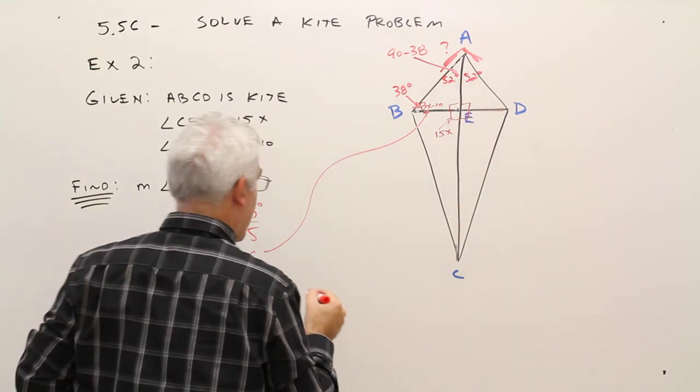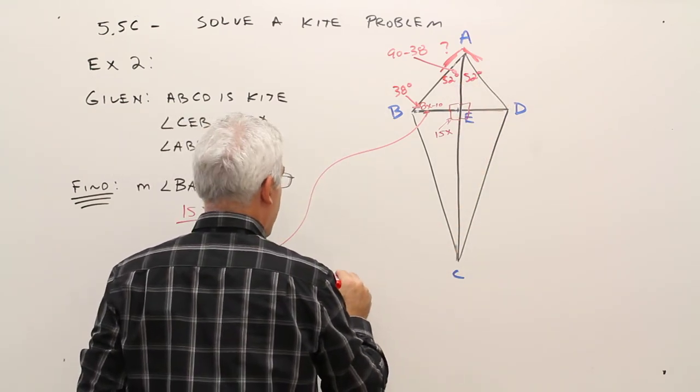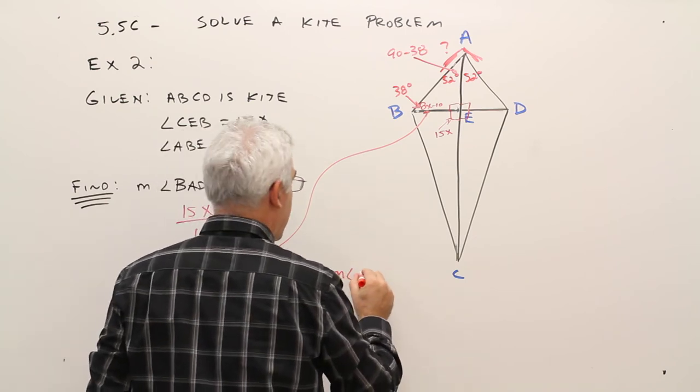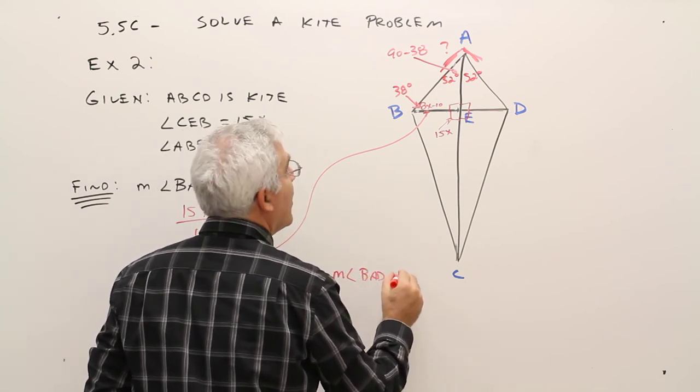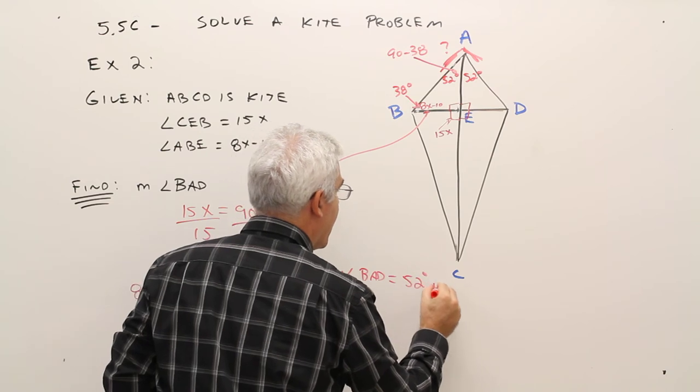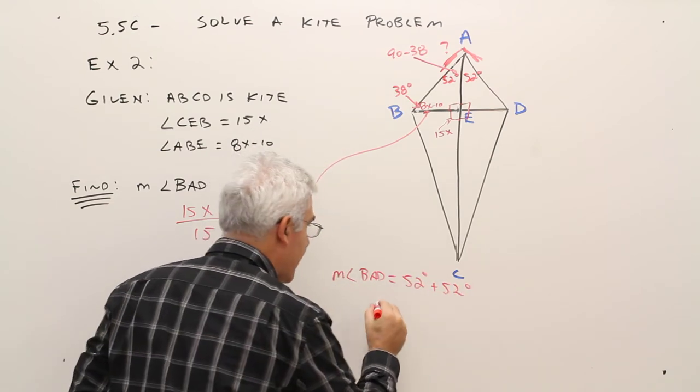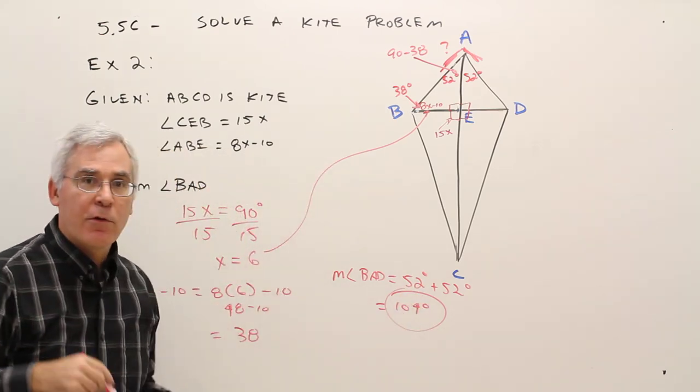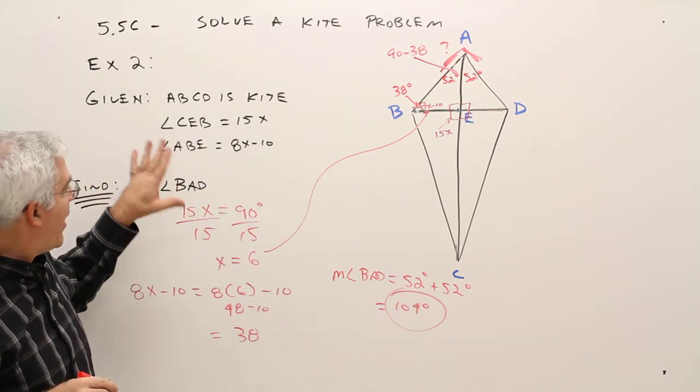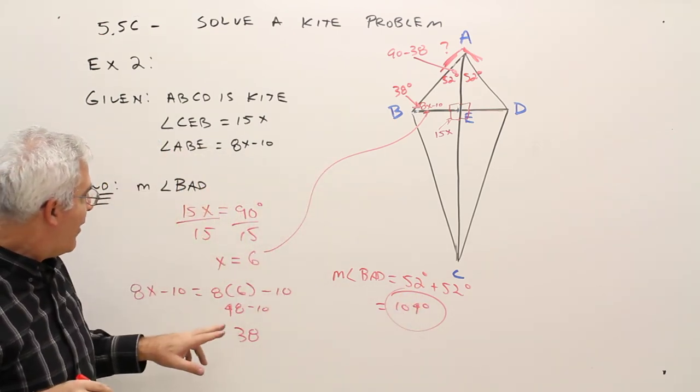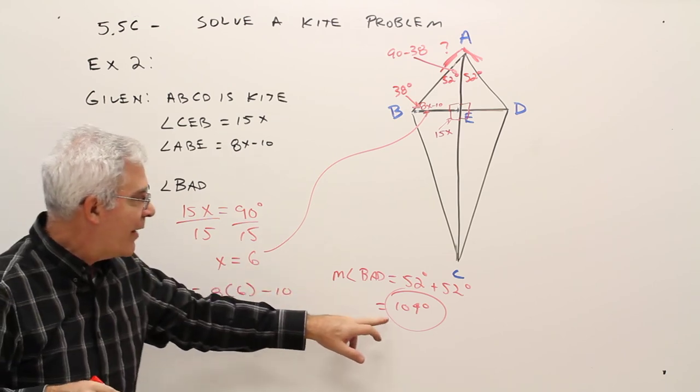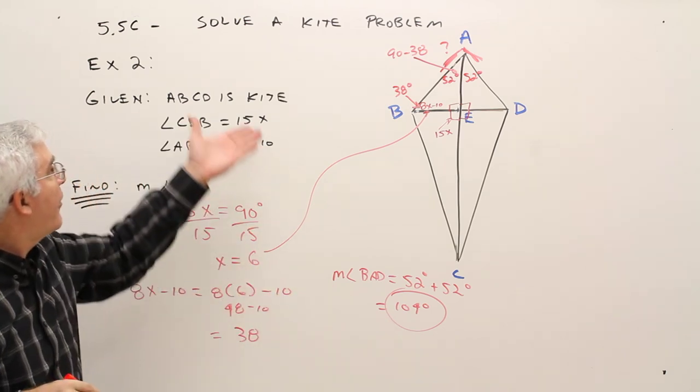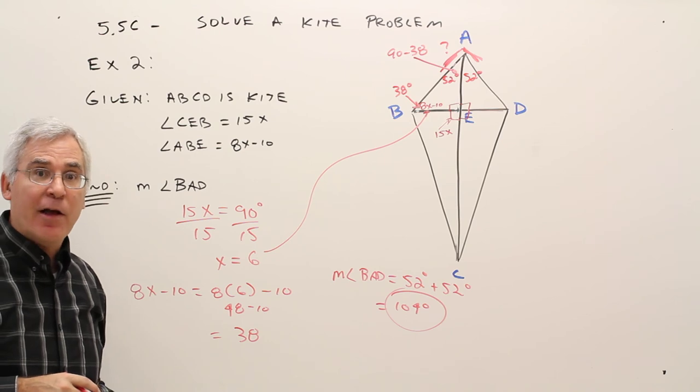And then I'll just do this stuff here. So the measure of angle BAD is going to be 52 degrees plus 52 degrees, which will be 104 degrees. So once again, setting up an equation, solving an equation, and then making sure to answer the question. So there you have it, how to solve a kite problem.